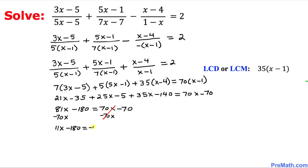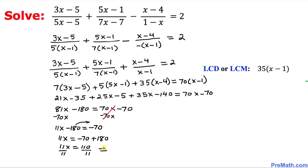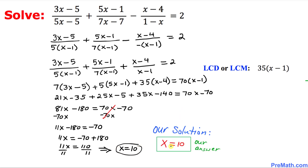Moving the negative 180 over: 11x equals negative 70 plus 180, which gives 11x equals 110. We want to isolate x, so let's divide both sides by 11. That means our x value turns out to be 10. So our solution is x equals 10.